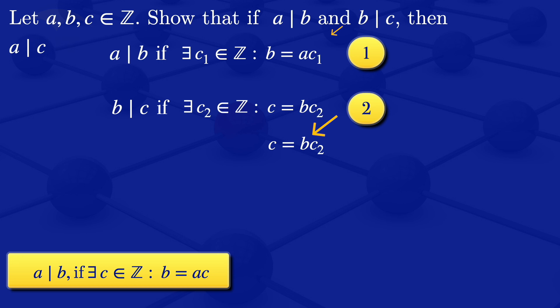what we would have is C is equal to AC1 multiplied by C2. I can put the C2 in the parenthesis there and would have A multiplied by C1 times C2.